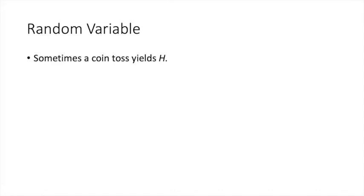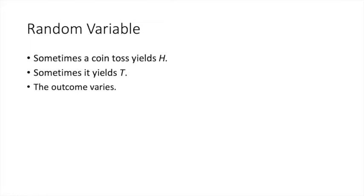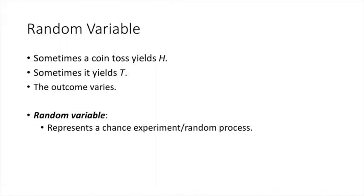Sometimes a coin toss produces a head; at other times it produces a tail. So the outcome of a chance experiment varies. Different outcomes have different chances of happening. Therefore, in probability theory, a chance experiment is represented by a random variable. So whenever you see a random variable, you must immediately think that it signifies a chance experiment — in other words, a random process where the outcome is not certain.